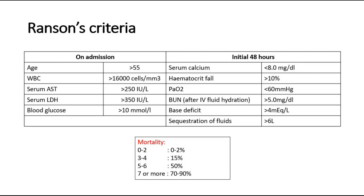Ranson's criteria is commonly used to prognosticate the mortality of the patient according to the score. The criteria include age, white blood cell count, serum AST level, serum LDH level, blood glucose, serum calcium, hematocrit drop of more than 10%, PaO2, blood urea nitrogen, base deficit, and sequestration of fluids. Any patient with a score of 3 and above is considered to have severe pancreatitis.